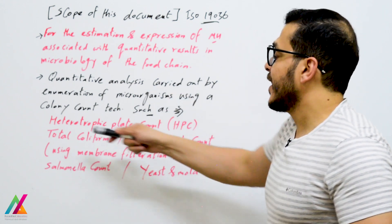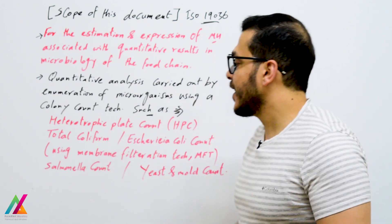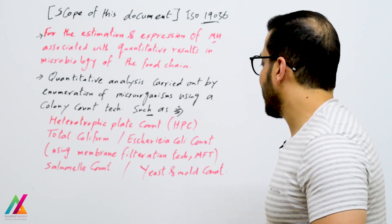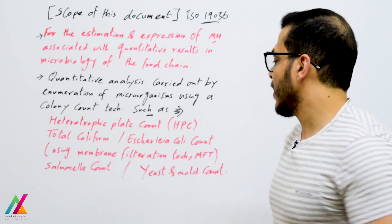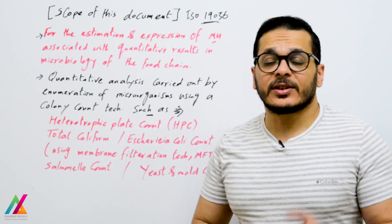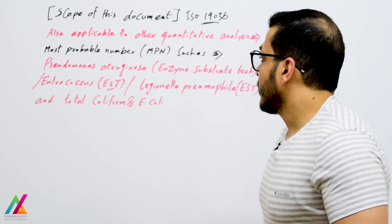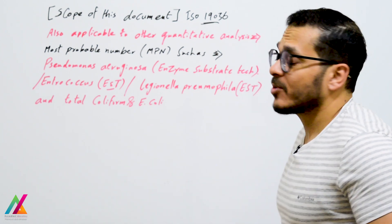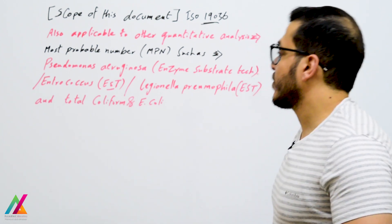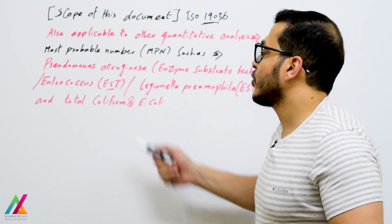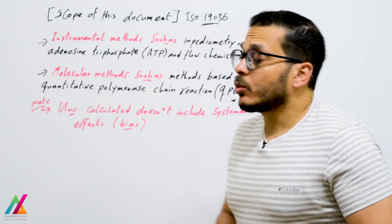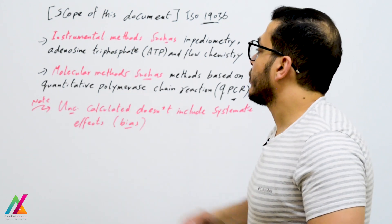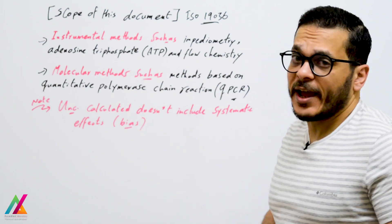As a microbiologist you may understand these techniques: heterotrophic plate count (HPC), total coliform, Escherichia coli count using membrane filtration technique, Salmonella count using membrane filtration, and yeast and mold count. It is also applicable to most probable number (MPN) methods such as Pseudomonas aeruginosa using enzyme substrate technique, Enterococcus, Legionella, total coliform and E. coli using enzyme substrate technique, and instrumental methods such as impedimetry, adenosine triphosphate (ATP), flow cytometry, and molecular methods based on quantitative PCR.